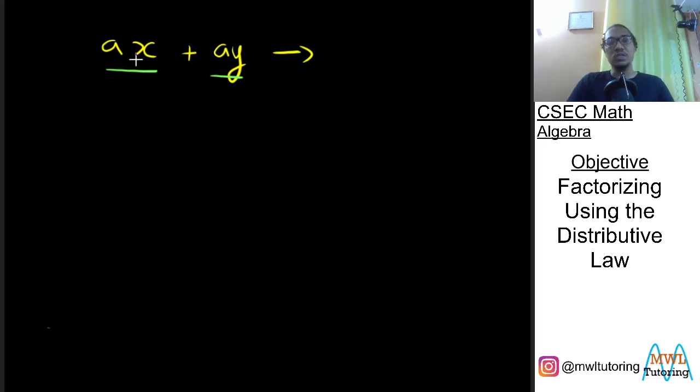So looking at these two terms, what is common between them is a. So we say that a is a common factor. And we take a out and we open our first bracket.